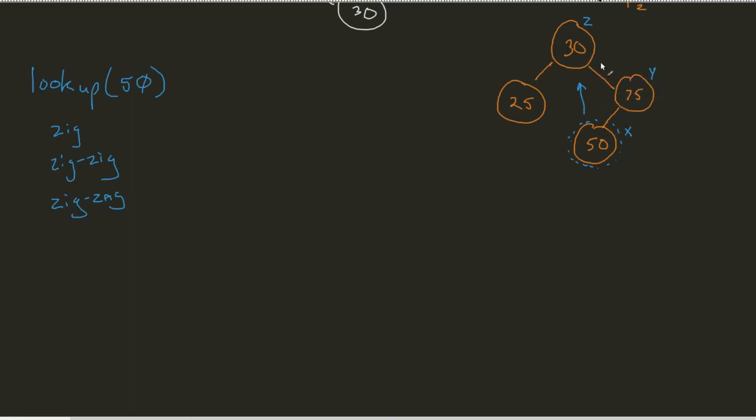In this case, y is the right child of z, and x is the left child of y. So we know it's not this one. We know it's not this one. And so that only leaves us with zig-zag.